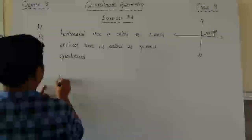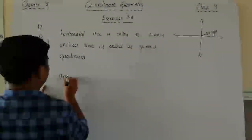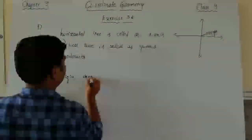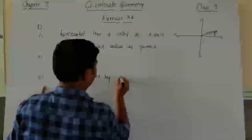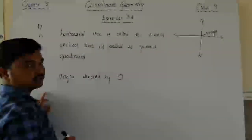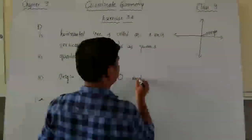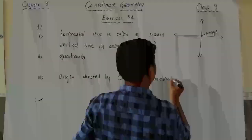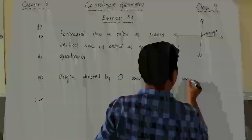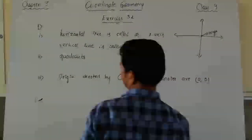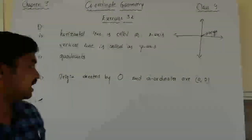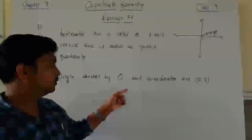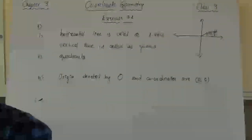Just writing 'origin' will be enough. For additional information: the origin is denoted by O and its coordinates are 0 comma 0. This completes the three sub-questions of question 1 in exercise 13.2.